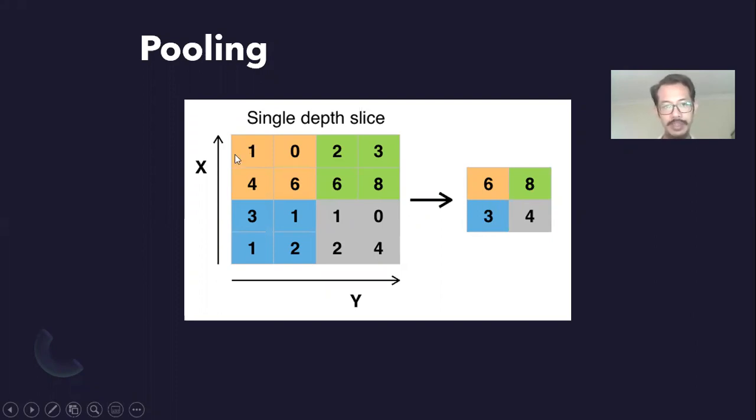This is an example of max pooling, where out of this 4 by 4 image, we turn it into a 2 by 2 image by just selecting the greatest number within the different filters. So here we choose 6, here we choose 8, here we choose 4 and 3, for example.